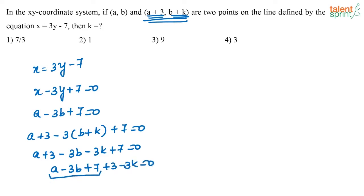I already know here that a minus 3b plus 7 is equal to 0. Or I can say 3 minus 3k is equal to 0, or I can say k is equal to 1. So the value of k is equal to 1.